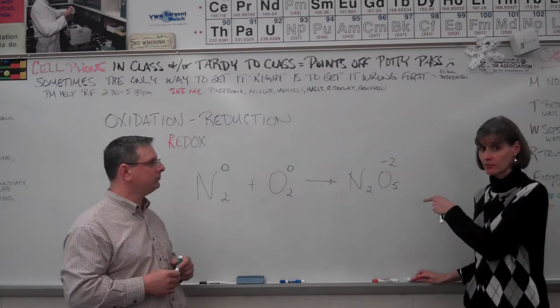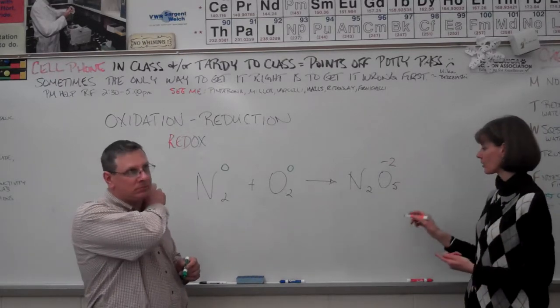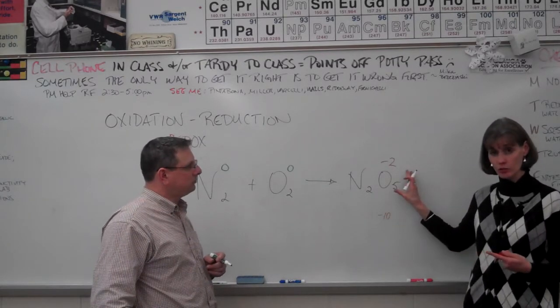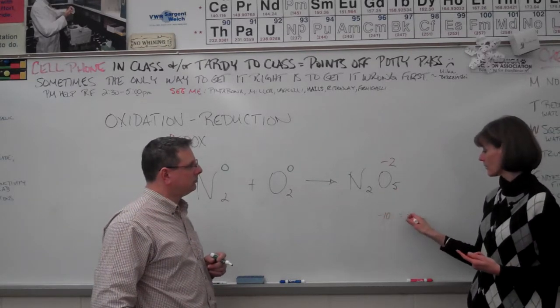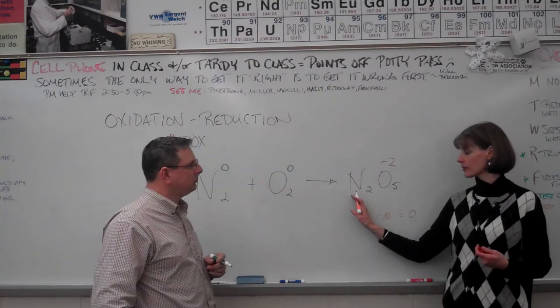There are five of them. So I'm going to kind of talk out loud how I'm thinking through this. Okay, five of them at negative two, that's got to be negative ten. But this is a neutral compound over here, so it's going to balance out to zero. Well, what does that mean for the oxidation number of nitrogen?